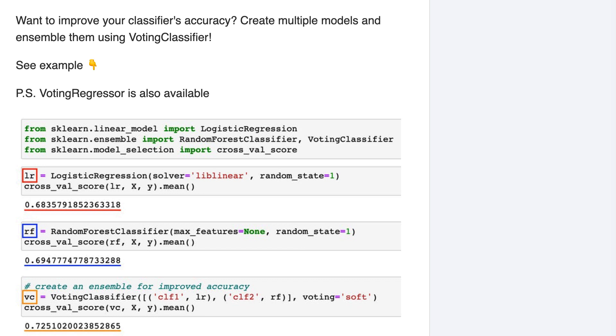For a classification problem, the way ensembling works is that you can either let the classifiers vote on what class to predict, which is known as hard voting, or you can average the predicted probabilities output by the classifiers, which is known as soft voting.